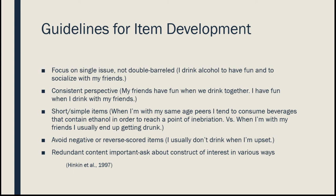We also want items throughout the scale to have a consistent perspective. If we want to know an individual's motivation for drinking, we don't need to ask what their friends think. An item like 'my friends have fun when we drink together' measures something very different than 'I have fun when I drink with my friends.' If we want to measure the individual's perspective, we should ask from the perspective of the person completing the scale.